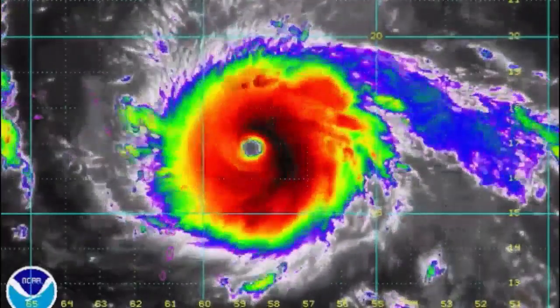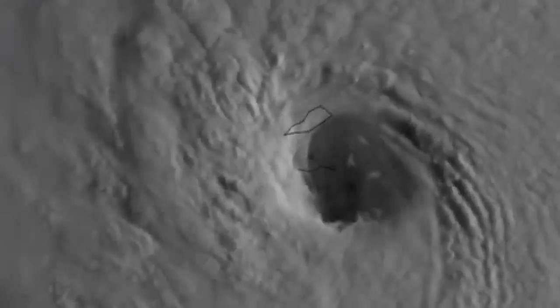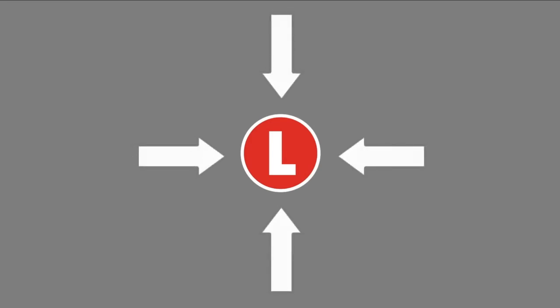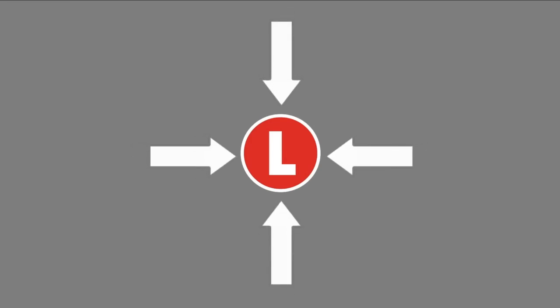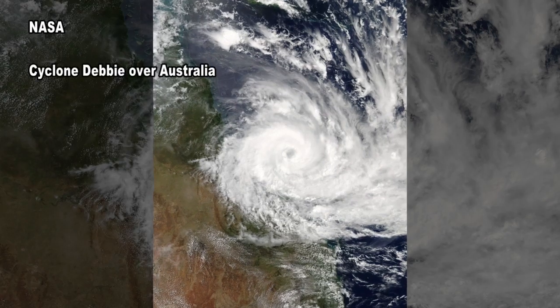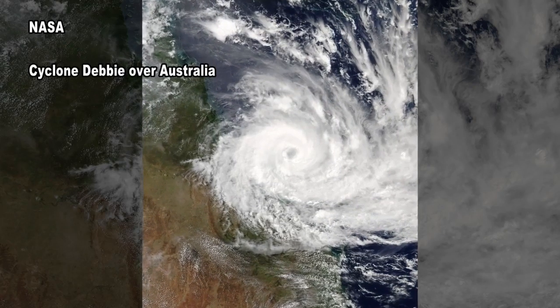Let's apply the Coriolis force to a hurricane. A hurricane has an eye of low pressure at the center. Air on the outside will move towards the center of the low to equalize the pressure. But because of the Coriolis effect, in the northern hemisphere the air will deflect to the right, creating a counterclockwise circulation. Hurricanes or low pressure systems spin clockwise in the southern hemisphere.